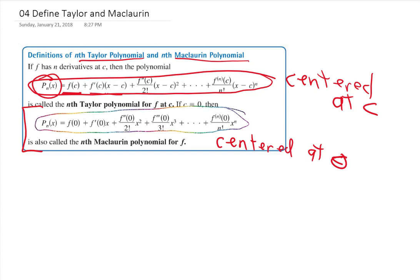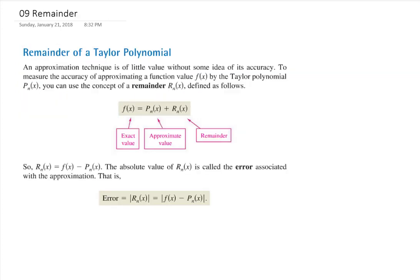These polynomials are only approximations — they aren't going to give us the exact answer, just an approximation. So anytime we have an approximation, there is some amount left over that would make it exact. To get the exact function value, we find the polynomial of degree n plus the remainder, and adding those two together gives us the exact function value.